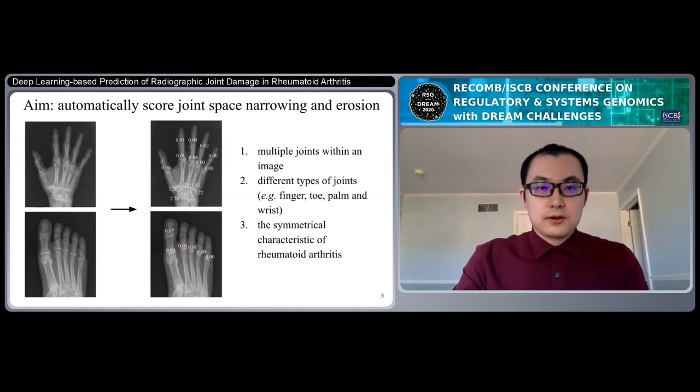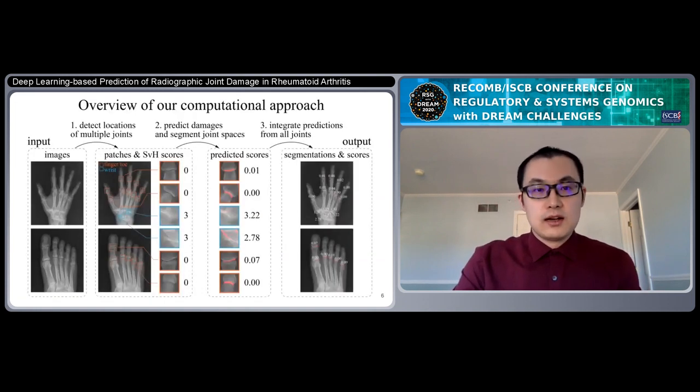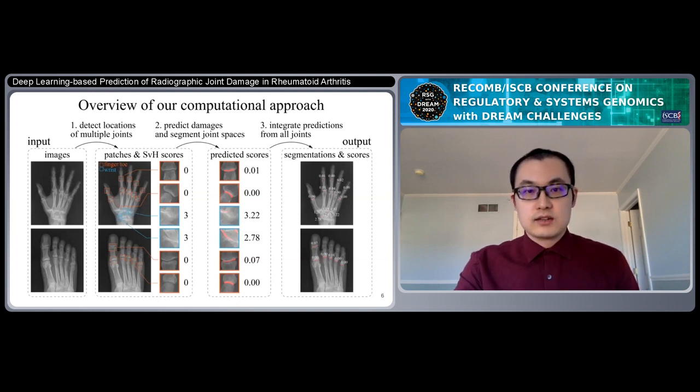So considering these three unique features, we build a three-step pipeline to address this problem. First, we detect the location of multiple joints. Then based on this location, we predict the joint damage. And then we integrate prediction from all joints and make the final prediction. I will go through these three steps one by one.